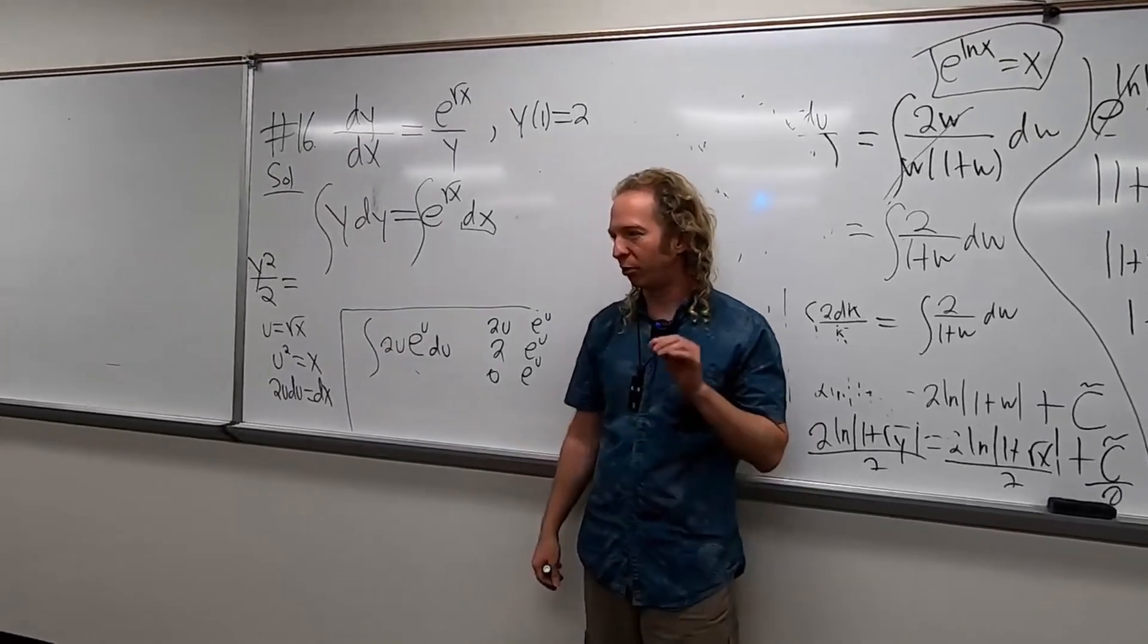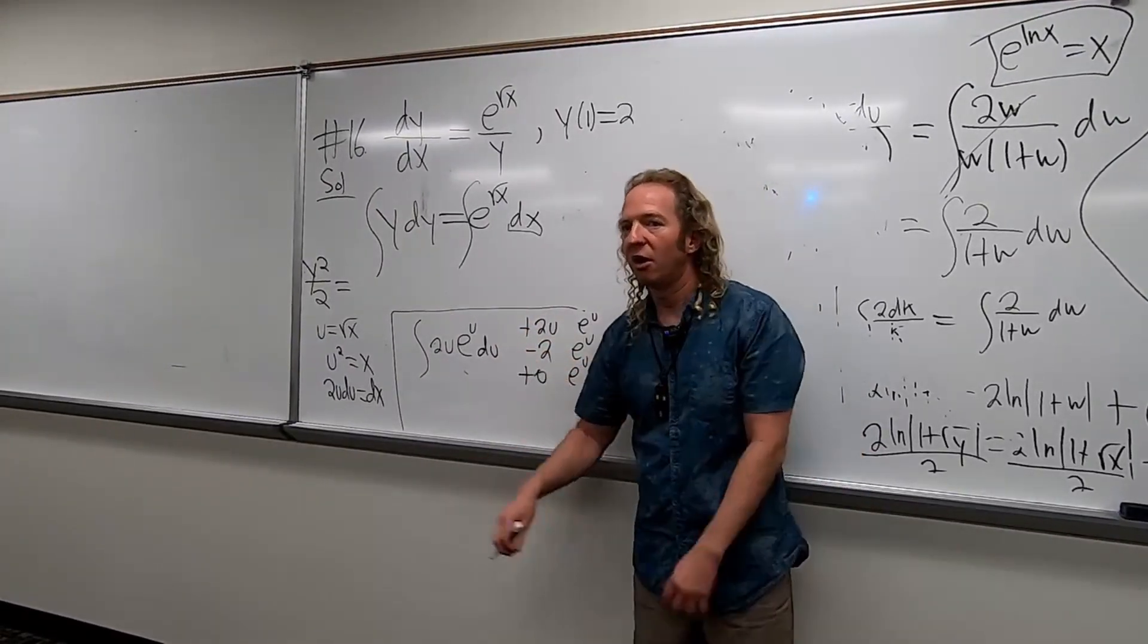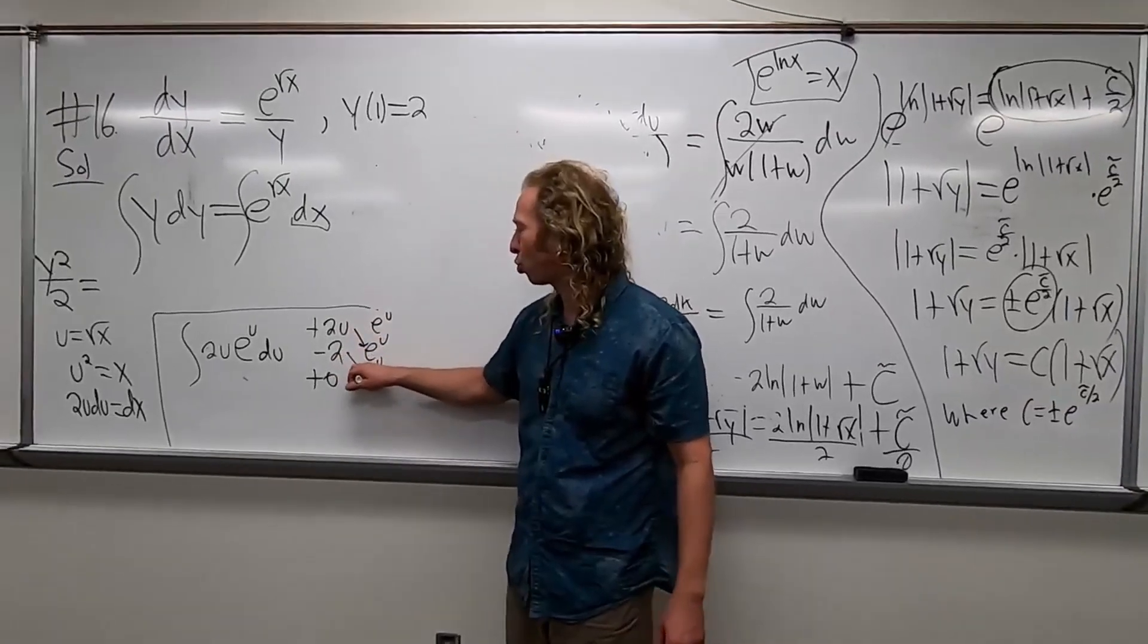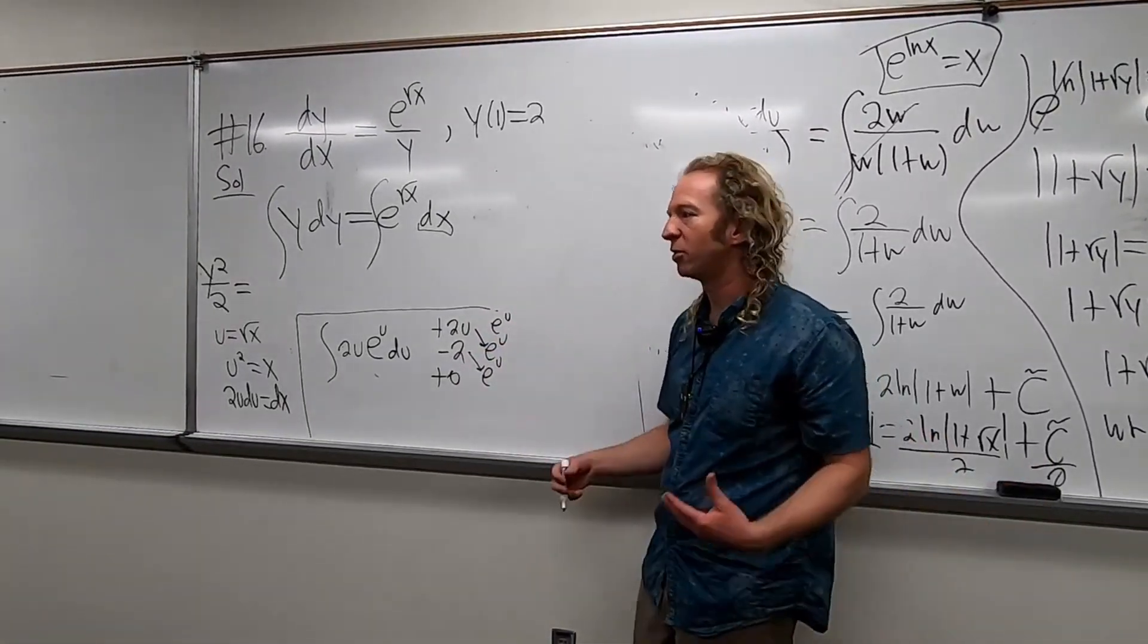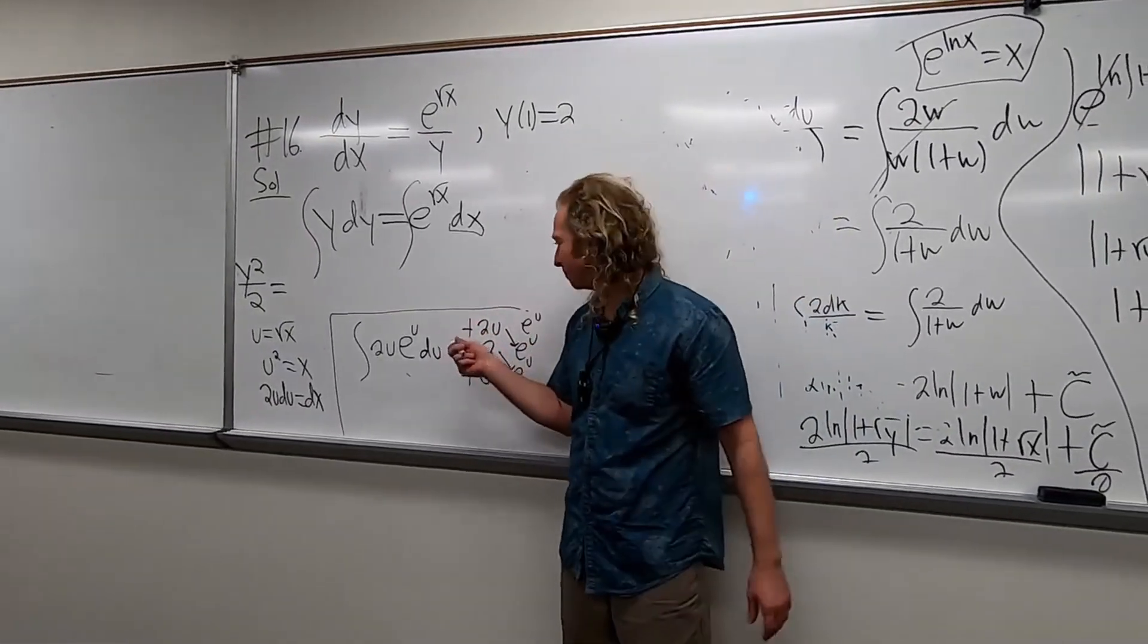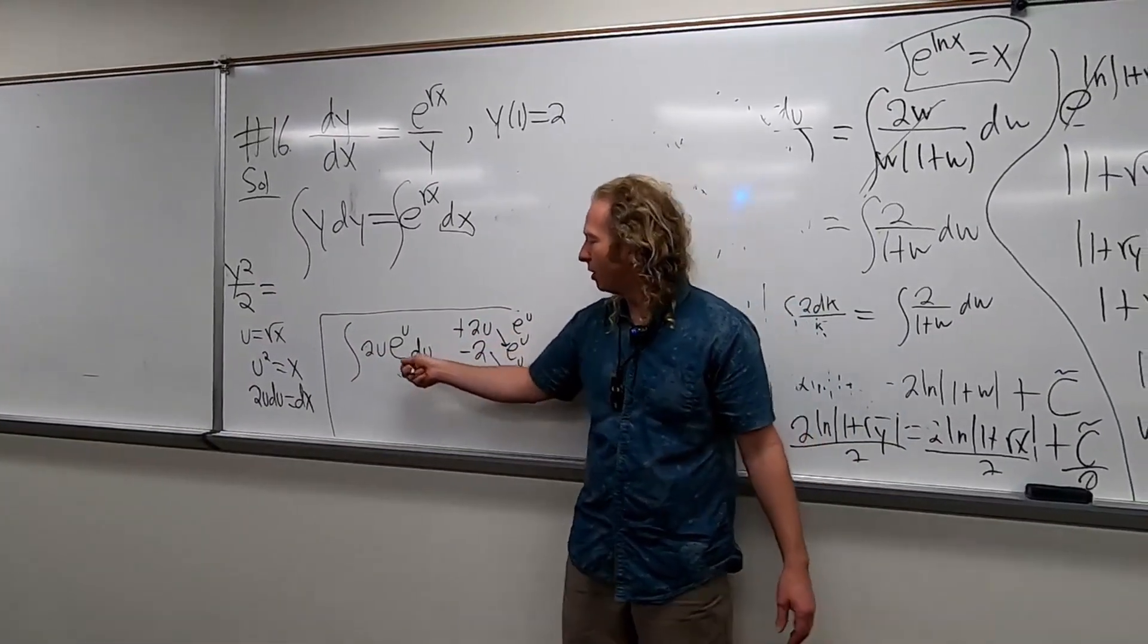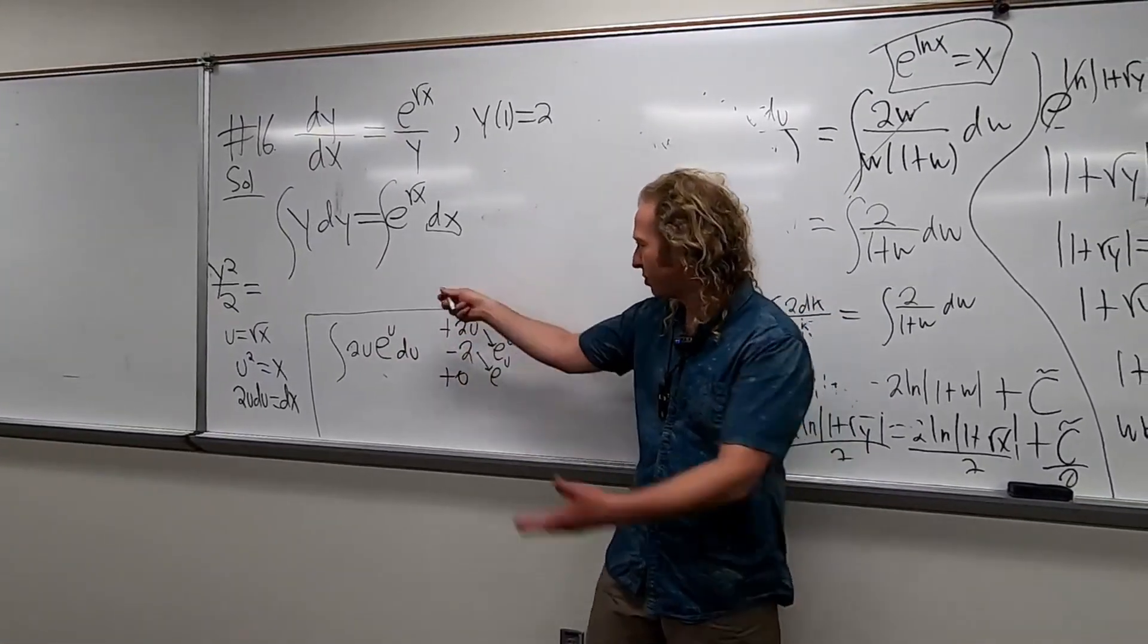Then you always start with plus. So it's plus, minus, plus. It's always plus, minus, plus, always, right? And then you're done. Now we just draw arrows. And you just follow the arrows to get the answer.